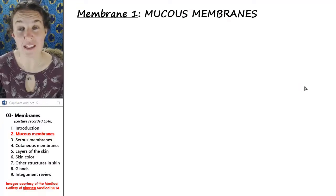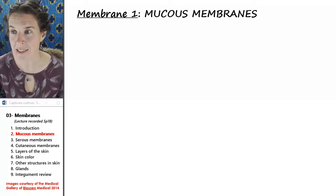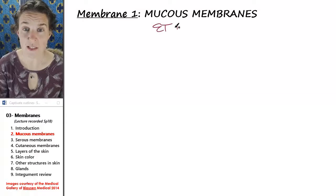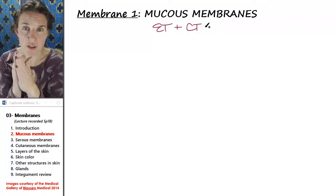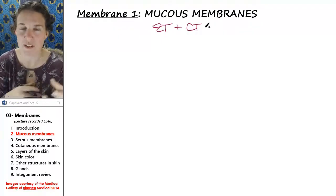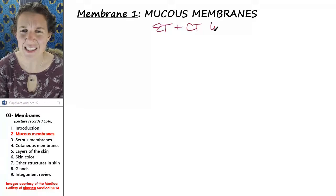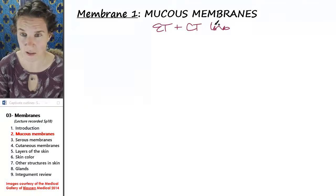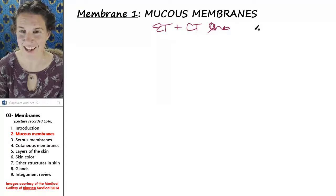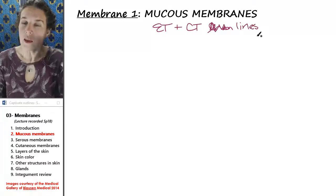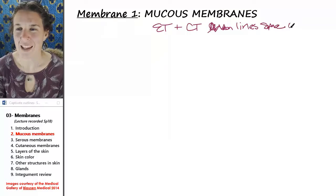Our first membrane is the mucous membrane, and a mucous membrane is defined as an epithelial tissue plus connective tissue sandwich structure — a structure built from epithelial tissue of some flavor and connective tissue — that lines a space outside the body.